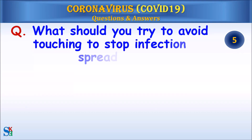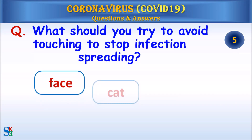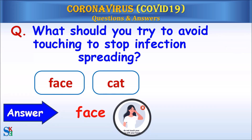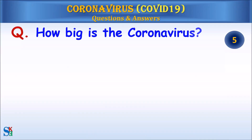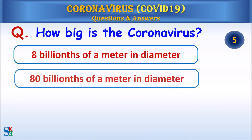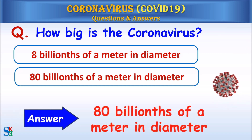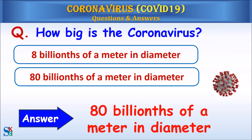Question: What should you try to avoid touching to stop infection spreading — your face or a cat? Answer: Your face. Question: How big is the coronavirus — 8 billionths of a meter in diameter or 80 billionths of a meter in diameter? Answer: 80 billionths of a meter in diameter.